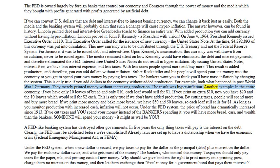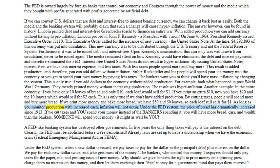Here's an example: if you have only 10 loaves of bread and only 10 dollars, each loaf would sell for one dollar. If you print an extra 10 dollars, now you have 20 dollars and 10 loaves, which would sell for two dollars each. This is only true if we don't have added production. By cutting taxes, people will spend more and buy more bread. If we print more money and bake more bread, we have 50 dollars and 50 loaves, so each loaf still sells for one dollar. As long as you monitor production with increased cash, inflation will not occur. Under the Fed system, the price of bread has dramatically increased since 1913.